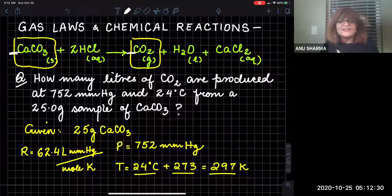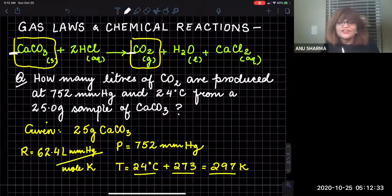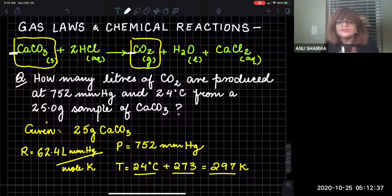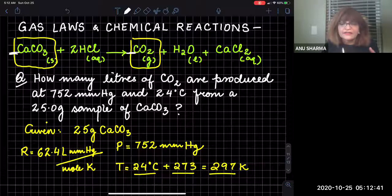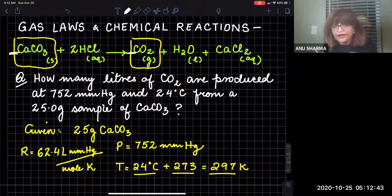Hi guys. Let's do this calculation using the gas laws in a chemical reaction. It's a stoichiometry problem in which you are given the amount of a reactant, and you are supposed to find the volume of the product.